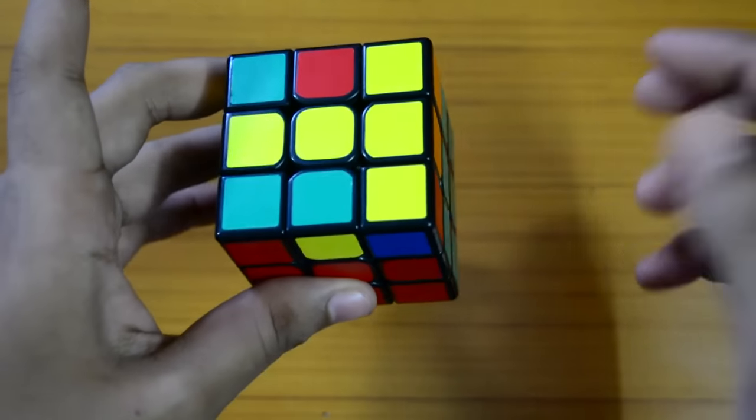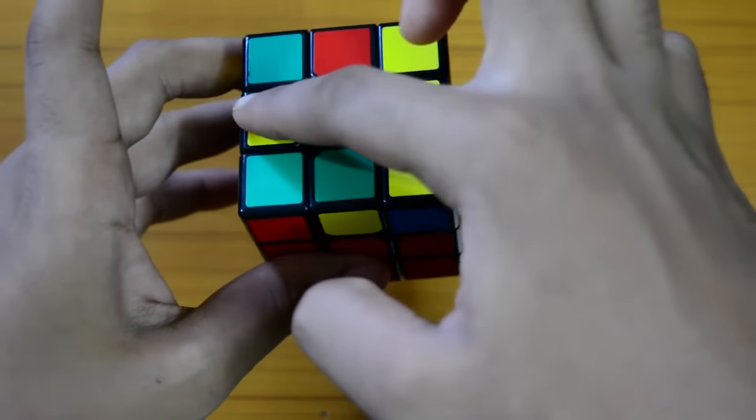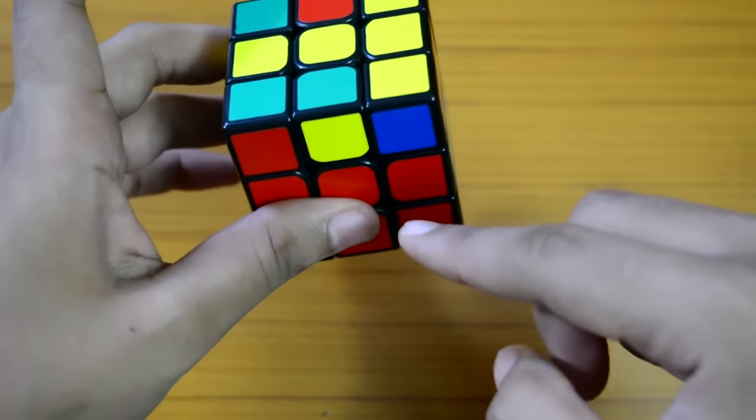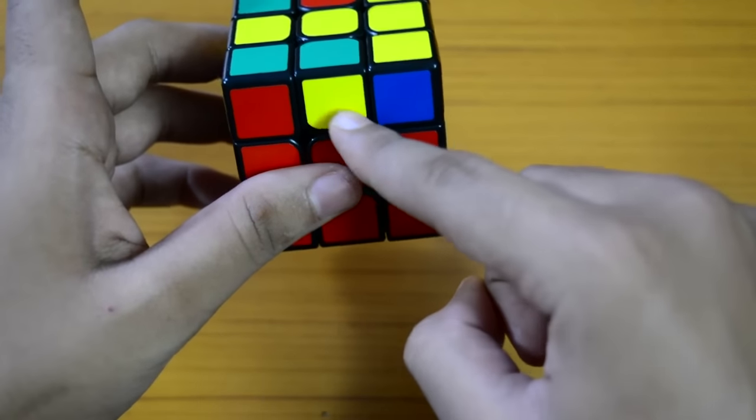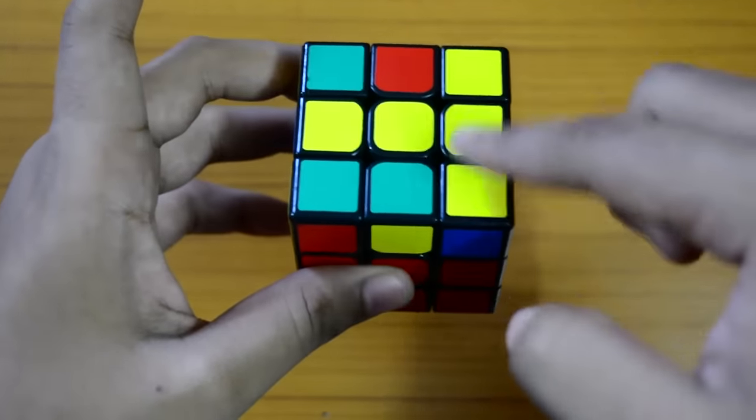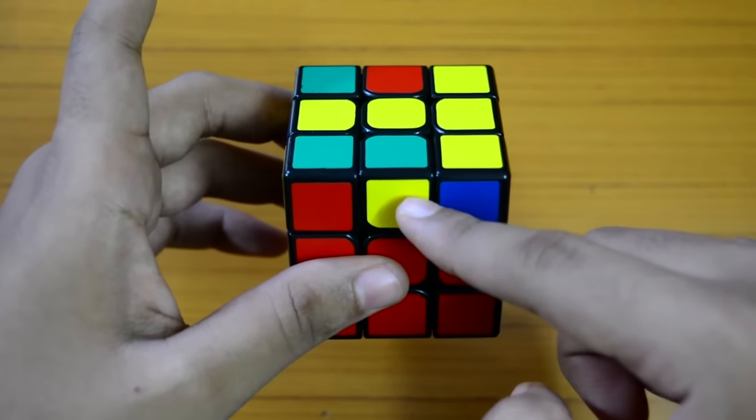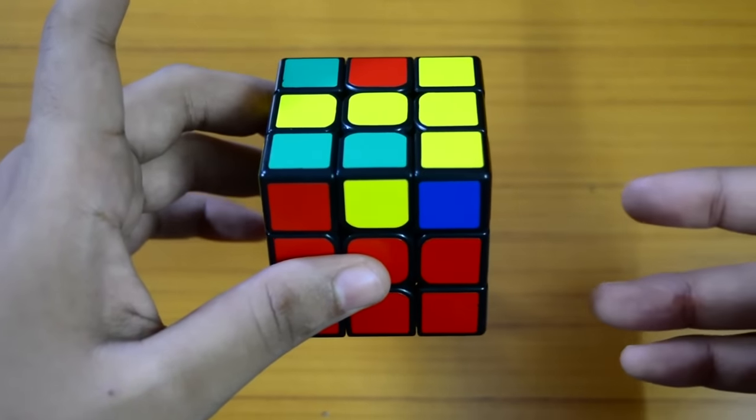So basically in this OLL you have a T shape like this and how you recognize this is that you will have only a single edge in the front. So if you have the T case and single edge in the front, you know this is OLL number 45.